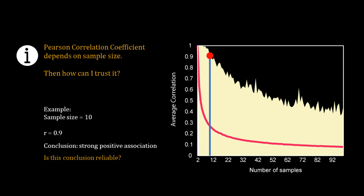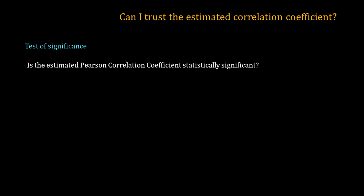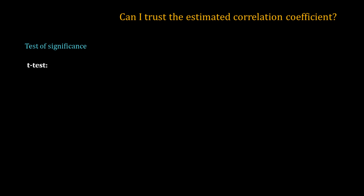Now you must be wondering how to solve this problem. This is not a unique problem in data analysis — we have statistical tests of hypothesis such as ANOVA or T-test. Here I will perform a statistical test on my estimated Pearson correlation coefficients, asking whether the estimated Pearson correlation coefficient is statistically significant. For the Pearson correlation coefficient I will use the T-test. The null hypothesis is that rho, the population correlation coefficient, is 0.